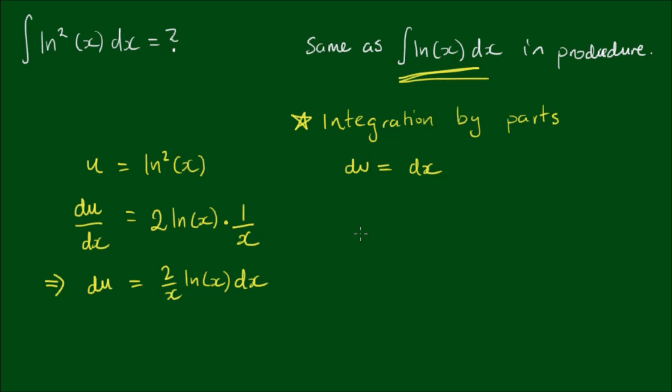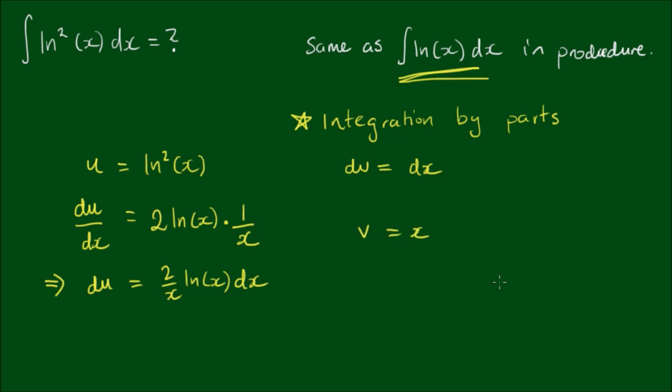With dv, we integrate that to v equals x. So the integration by parts formula is the integral of u dv equals u times v minus the integral of v du. So thus the integral of log squared, which we said was u dv, which is dx, is equal to u, which is log squared of x, by v, which is x, minus the integral of v, which is x. And we finally sub in du, which is 2 on x, by log x dx.